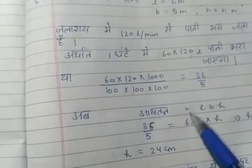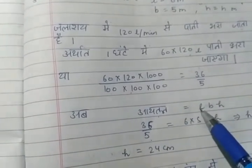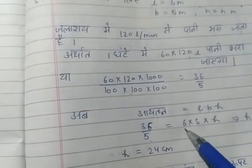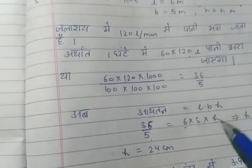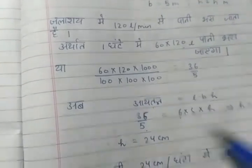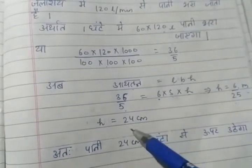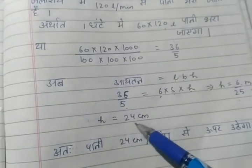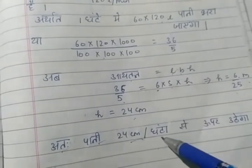And when we solve this, the value comes 36/5. Now the volume is equal to 36/5 and we know that volume is length × breadth × height. The length value is 6, breadth is 5, and we have to find the height h. To simplify this equation, we get the value of h as 6/25 meters. We will convert the value of h to 24 centimeters. So it will be 24 centimeters per hour.